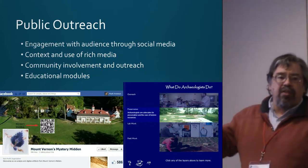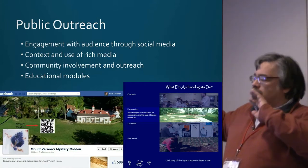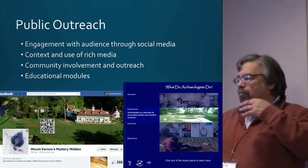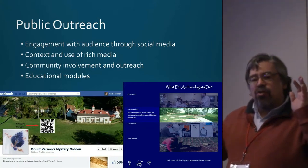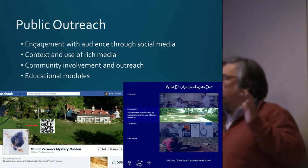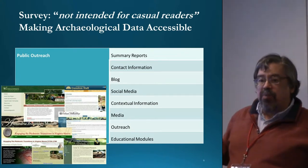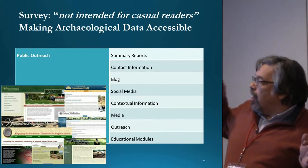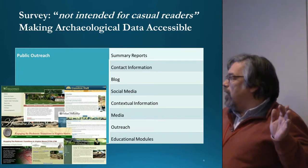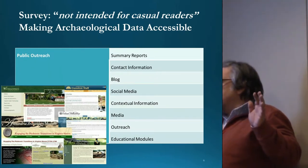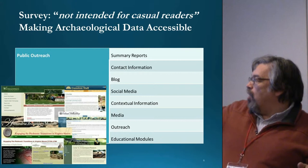What fields did I look at on these websites to identify components of public outreach? We know there are aspects of social media, this Web 2.0 idea of multivocality, democratization of knowledge, context and use of rich media, community involvement and outreach, and educational modules — those were the actual fields I tracked. Specifically: did the website have summary reports, contact information, a blog, social media, contextual information, other media, outreach, and educational modules? These terms are more clearly defined in the full survey.